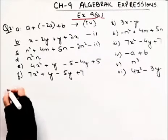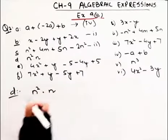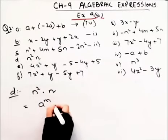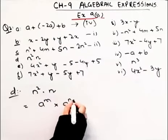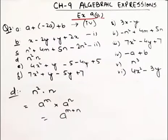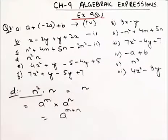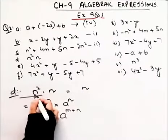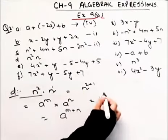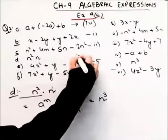Now the D part: n² × n. We have a rule — a to the power m × a to the power n equals a to the power m+n. Applying the same rule here: the base is n, and since there is a multiplication sign with the same base, we add the powers. This gives n to the power 3. So the answer is the 5th part.